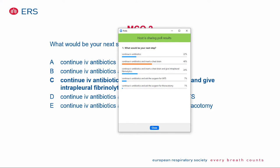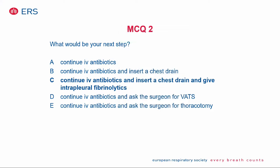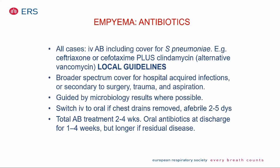According to the guidelines, the most appropriate answer would be to continue IV antibiotics and insert a chest drain and give intrapleural fibrinolytics — though there is quite some variance between countries. If you have a very experienced surgeon who is very good at VATS, that may be a good option as well. In some countries, like mine, fibrinolytics are not used and we would only insert a chest drain. All cases need antibiotics, including cover for strep pneumoniae, but you should adhere to local guidelines.